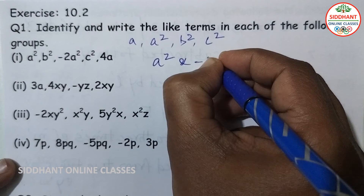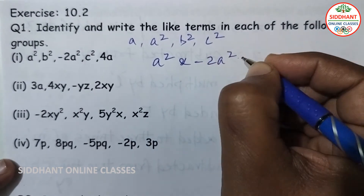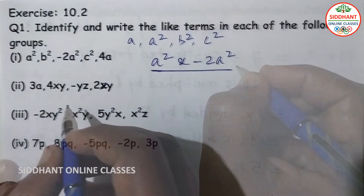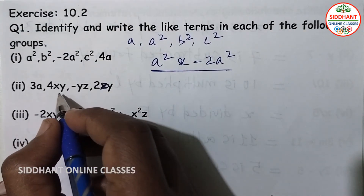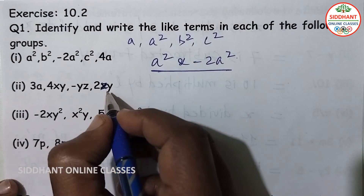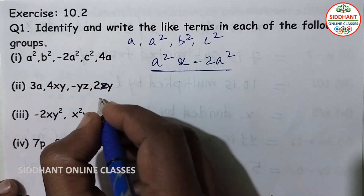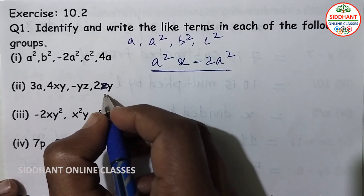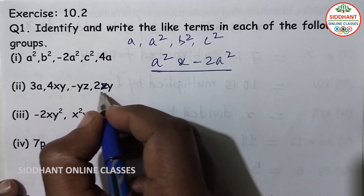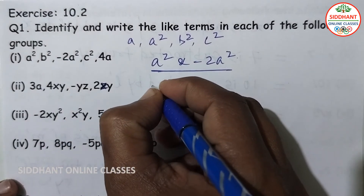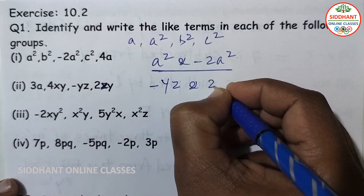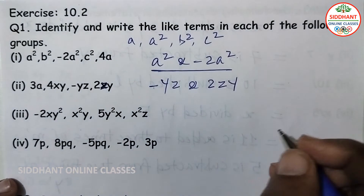The two like terms in the first group are a square and minus 2a square. For the second group — 3a, 4xy, minus yz, and 2zy — the common variable terms are yz and zy, which are the same. So the like terms are yz and 2zy.